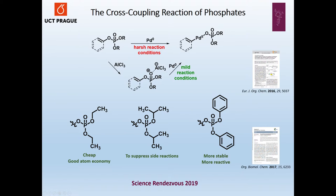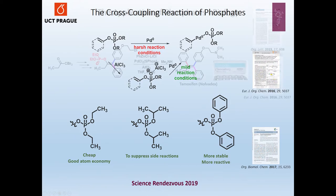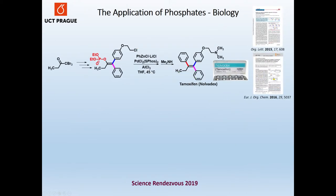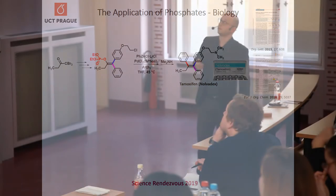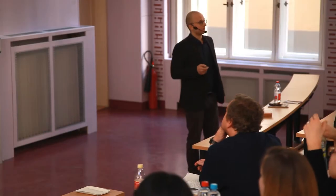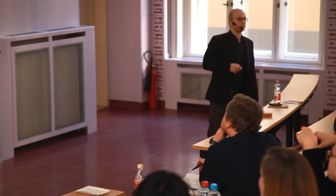Using all this knowledge, we have developed several applications for the synthesis of biologically active molecules and molecules for material science. Starting from simple substrates, we are able by two consecutive cross-coupling reactions to prepare enol phosphates, which can be used for the preparation of tetrasubstituted alkenes like tamoxifen. Tamoxifen and its analogues are used to treat breast cancer.